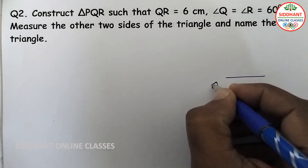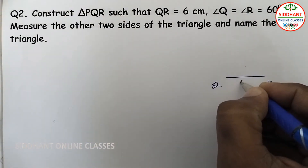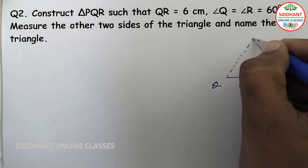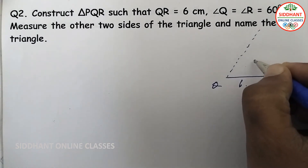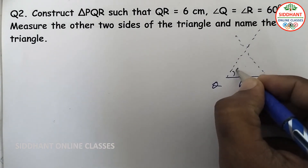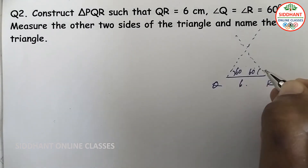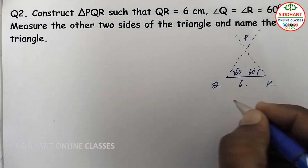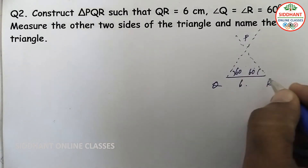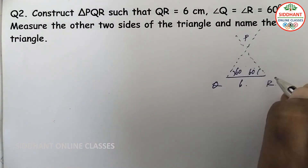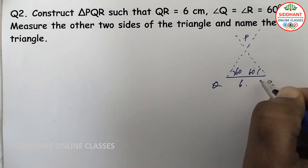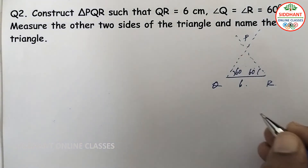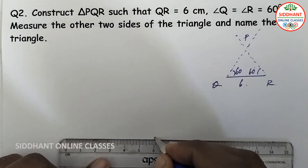In the rough figure, this is Q and this is R, with QR equal to 6 centimeters. From Q we take 60 degrees and from R we take 60 degrees. We get an intersection point P, and joining PQ and PR gives us triangle PQR.